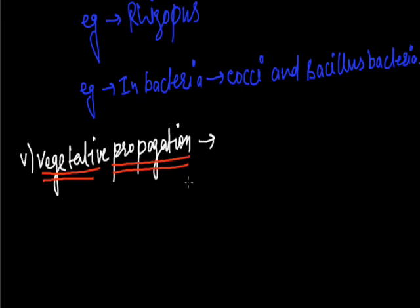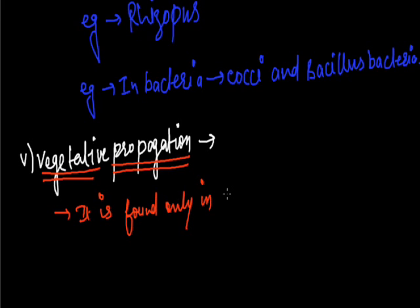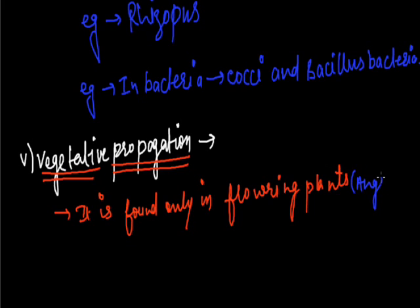The next type of asexual reproduction is vegetative propagation. Vegetative propagation is exclusively found in flowering plants, also called angiosperms. In this type of reproduction, the new plant develops from the vegetative parts of the parent plant.